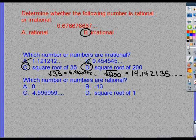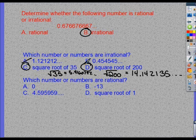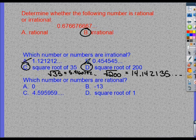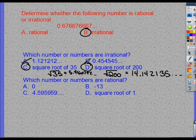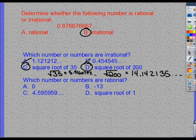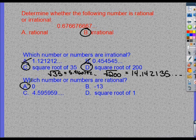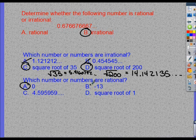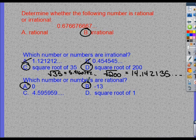All right? And then the next one says which number or numbers are rational? So these are ones that have a decimal that can stop or go on forever and repeat. So, 0, we know that one because we have a decimal. Negative 13 because that's an integer. We know all integers are rational.